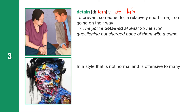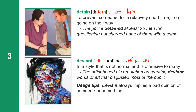The next word means in a style that is not normal and is offensive to many. The word is Deviant. Deviant is an adjective. It has three syllables: D-E-V-I-A-N-T. The artist based his reputation on creating deviant works of art that disgusted most of the public. Deviant always implies a bad opinion of someone or something.